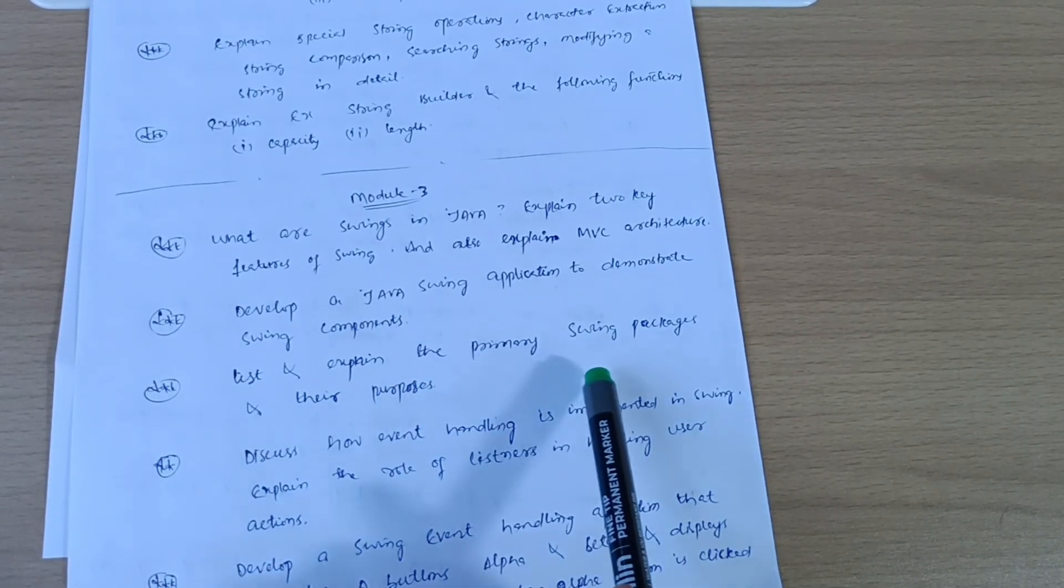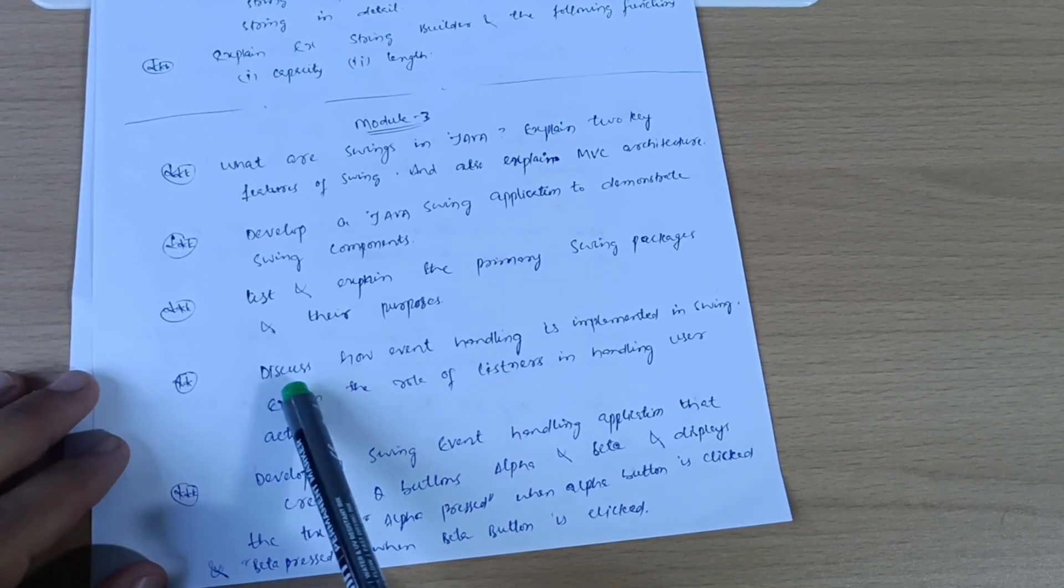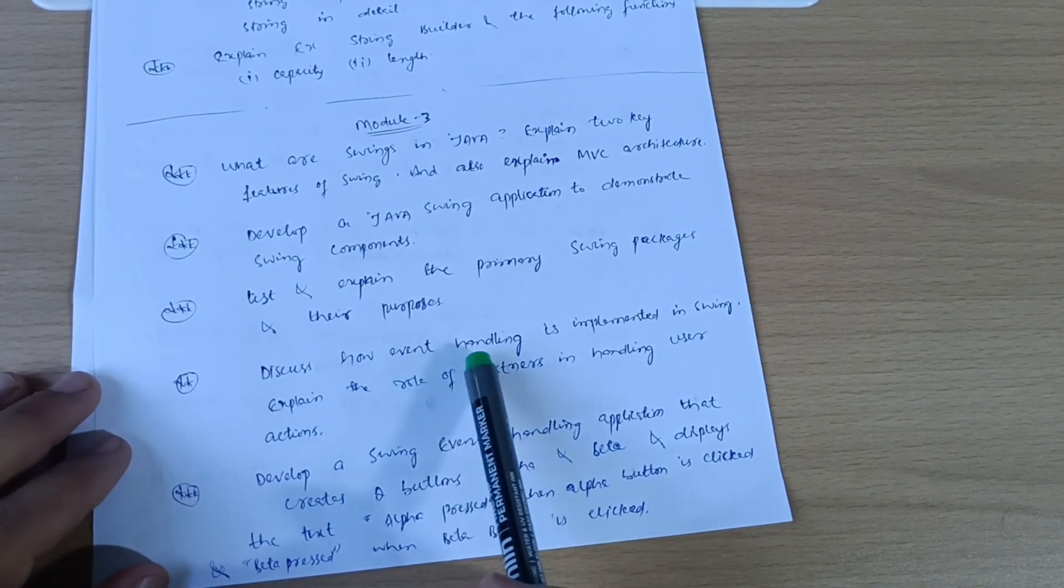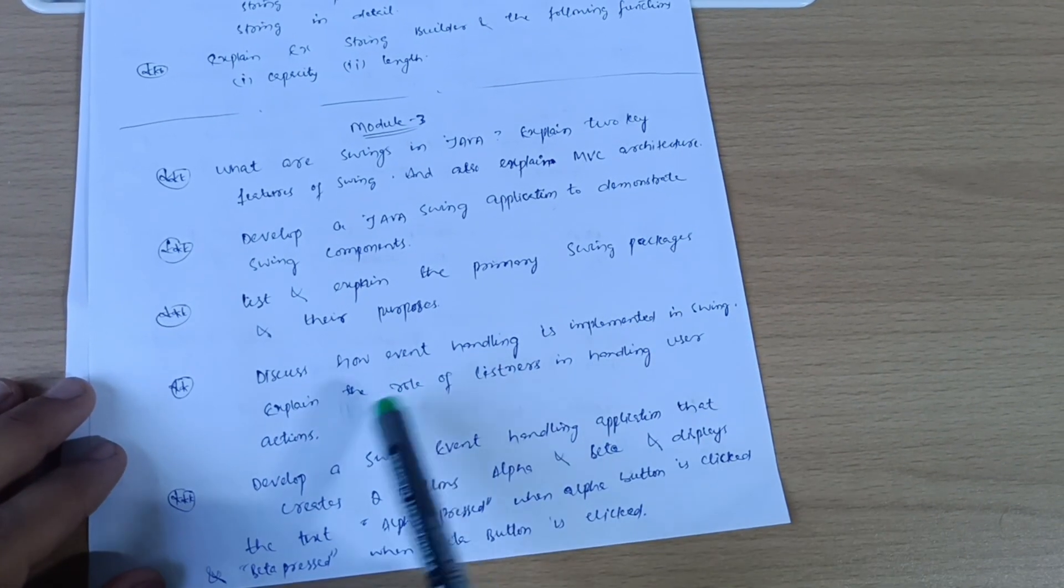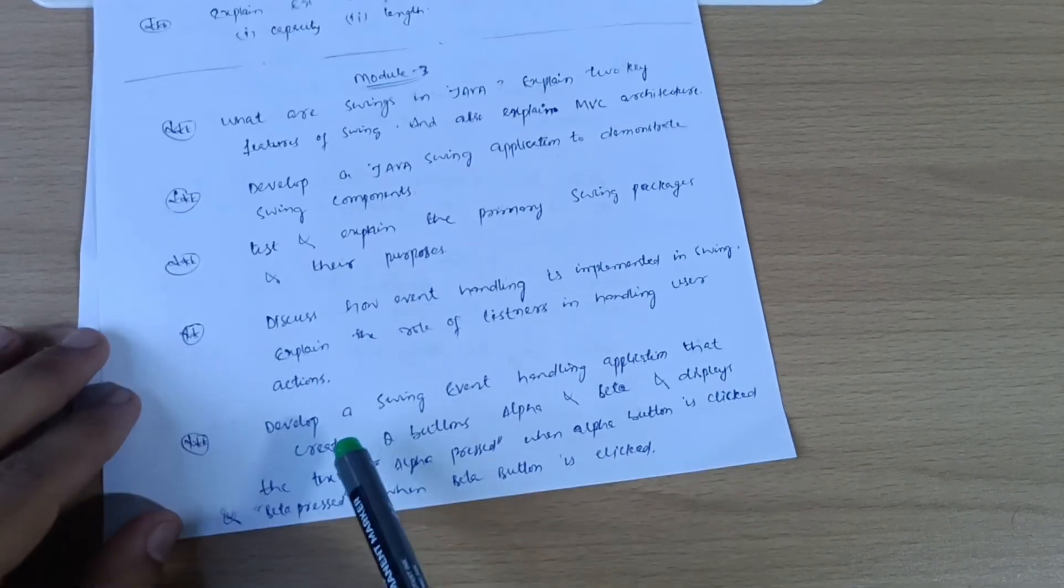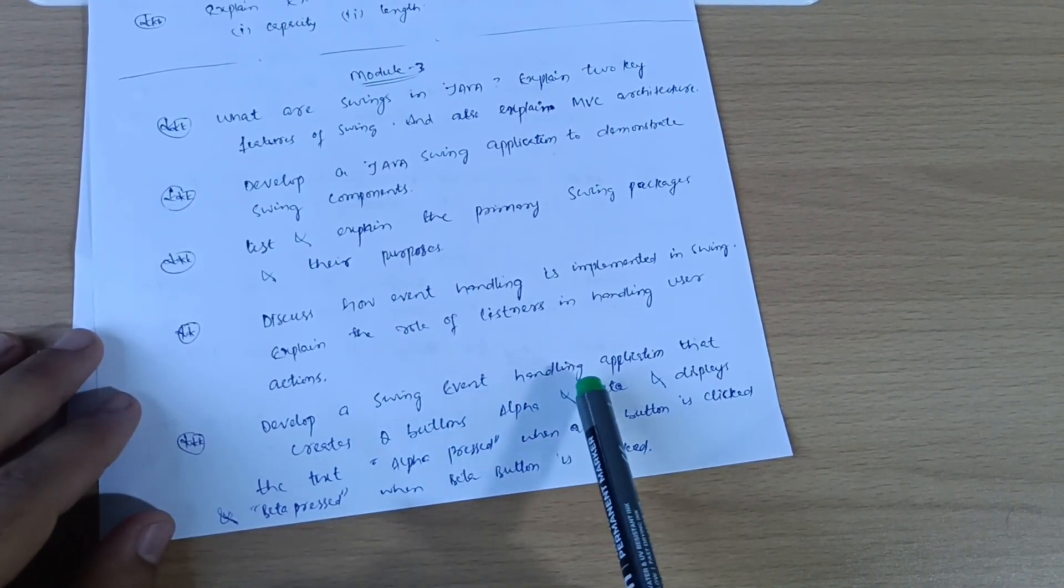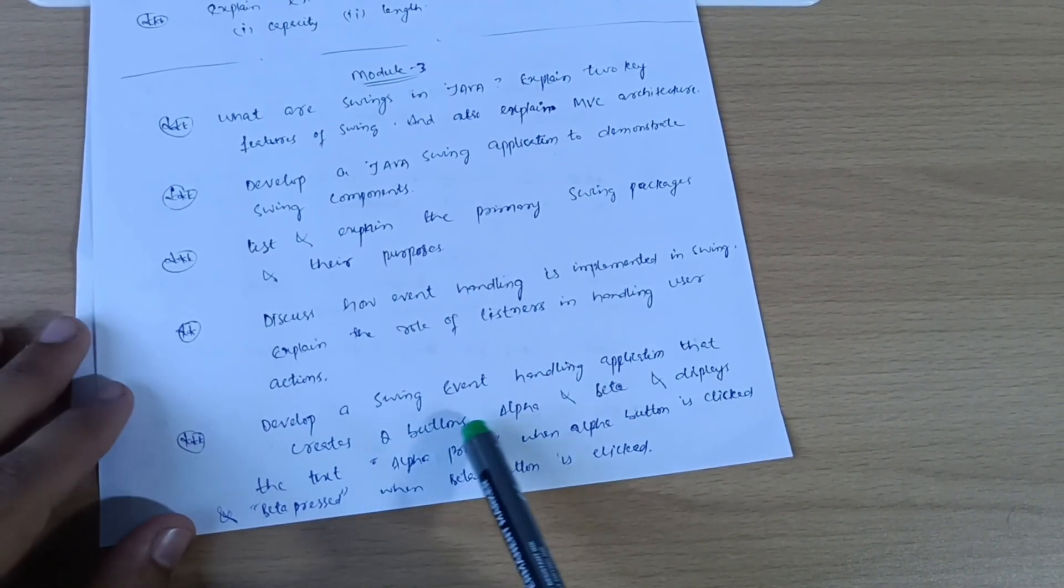List and expand the primary Swing package and their purposes. Next we have: discuss how event handling is implemented in Swing. Expand the role of listeners in handling user actions.